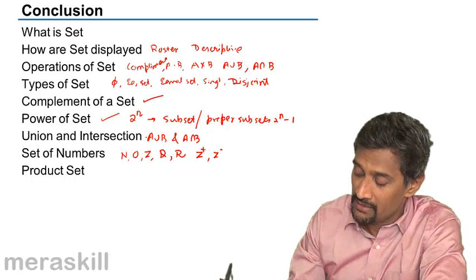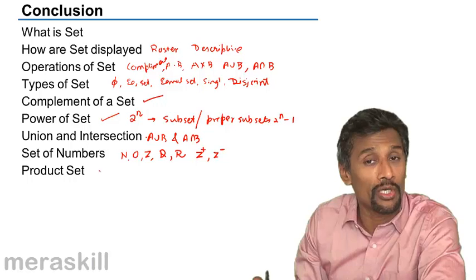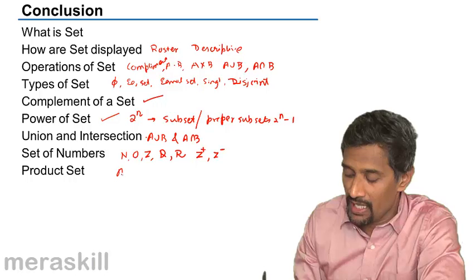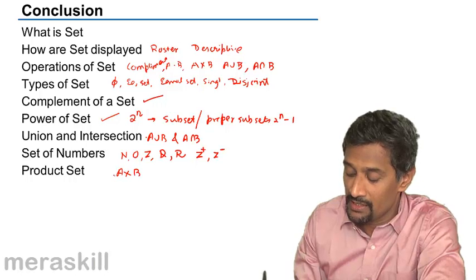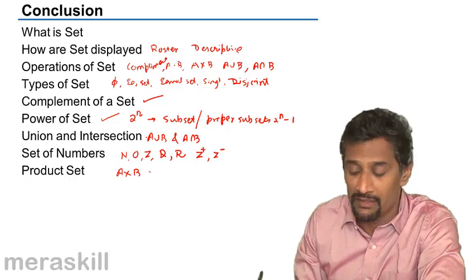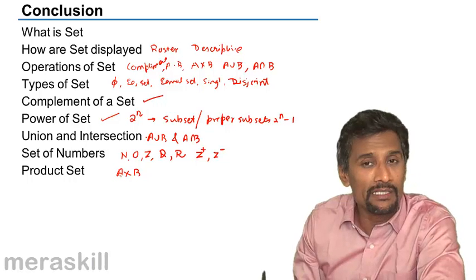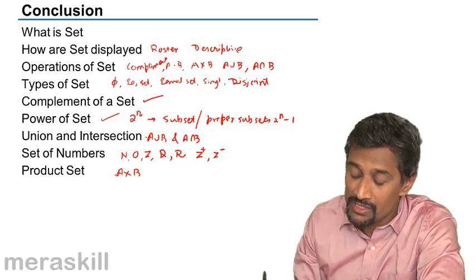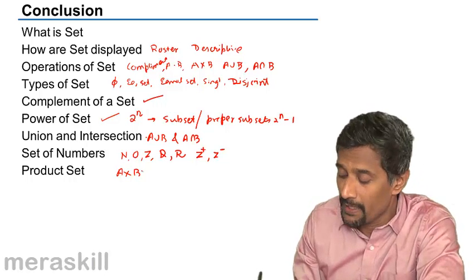Then the product set, also called the Cartesian product. Whenever you're doing A into B, it contains all those ordered pairs in which the first element in every pair belongs to A and the second belongs to B. B cross A will be the other way - in each ordered pair, the first element will be in B and the second element will be in A.